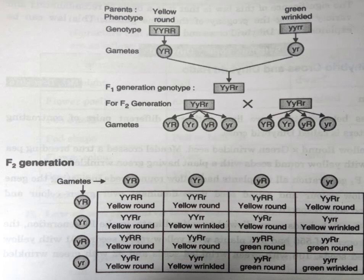When the F1 hybrids were allowed to self-pollinate, in the F2 generation the total progeny of 556 had 315 plants with yellow round seeds, 101 with yellow wrinkled seeds, 108 with green round seeds, and 32 with green wrinkled seeds. So this ratio is in accordance with the ratio 9:3:3:1. The figures obtained in the F2 generation are in the ratio of 9:3:3:1, and this ratio is called the dihybrid ratio.